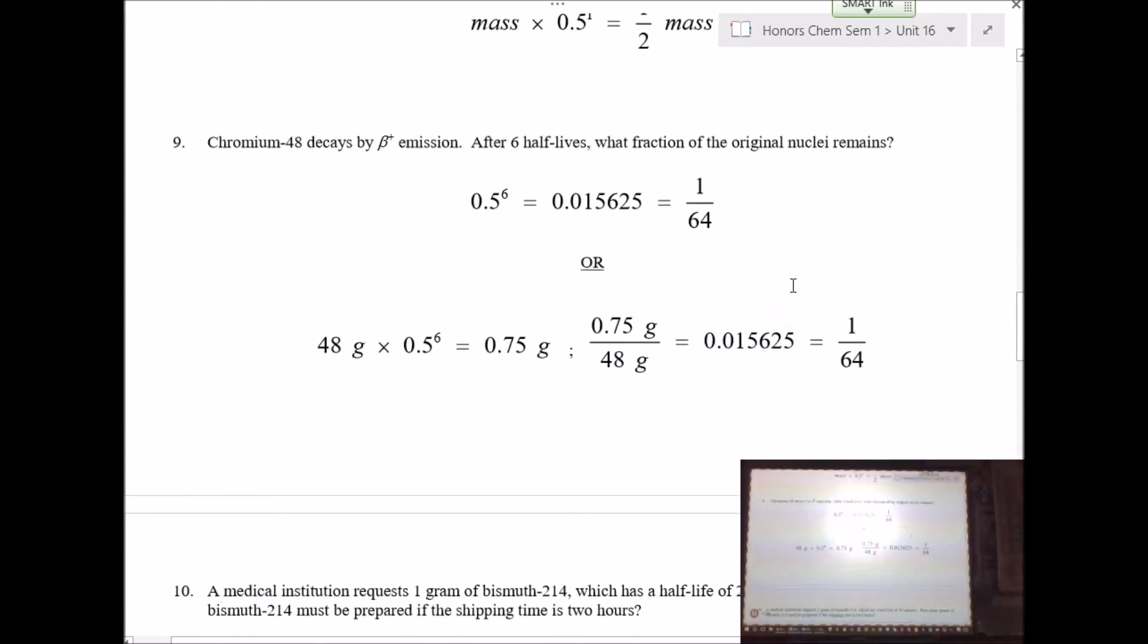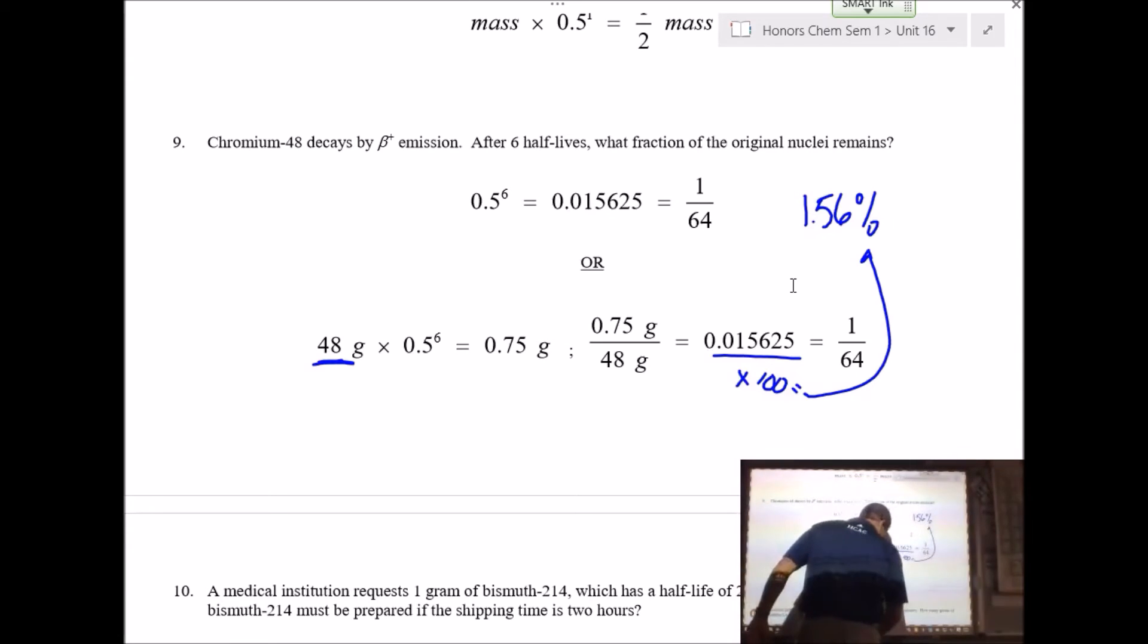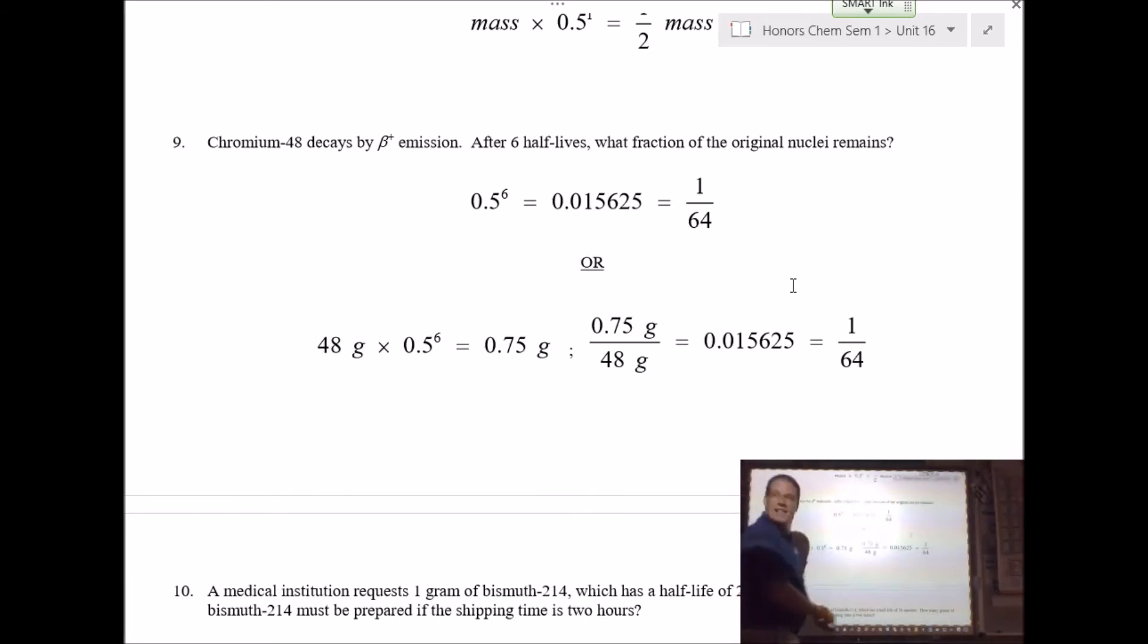Looking at number 9. Chromium-48 undergoes positron emission. After six half-lives, what fraction or percent of the original nuclei remains? Now, I didn't do a percent, but is it like 1.56? So, you get to choose what mass, and I bet a lot of you picked 40 grams. Yeah, here it is. So, you take how much you have left, divided by what you started with, times 100, and that would be the 1.56. And I'll ask about a percent tomorrow, I won't ask about fraction, but I'll give you an option if you understand.